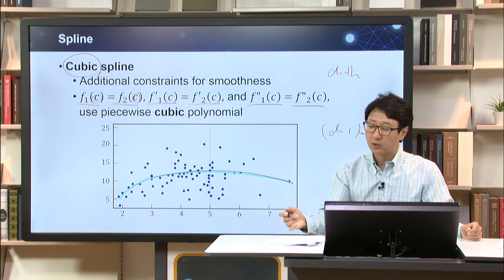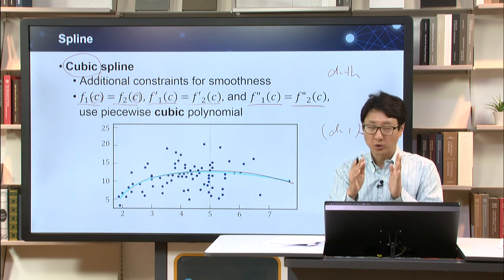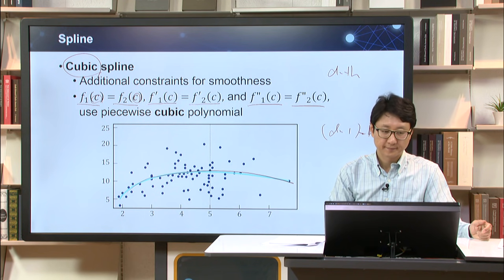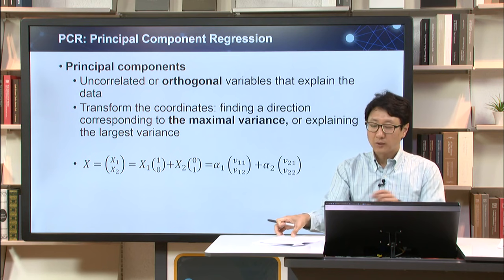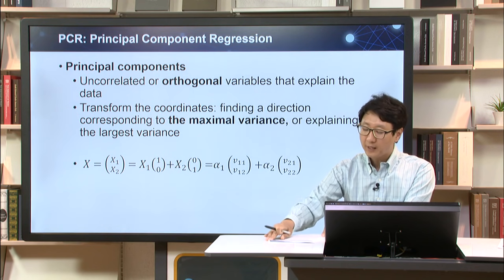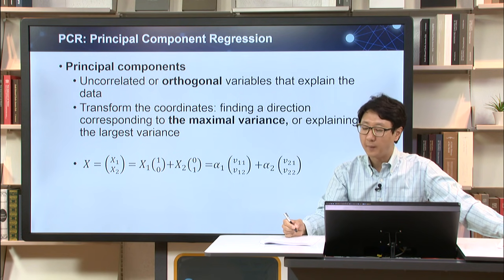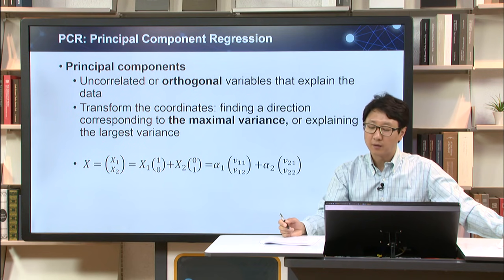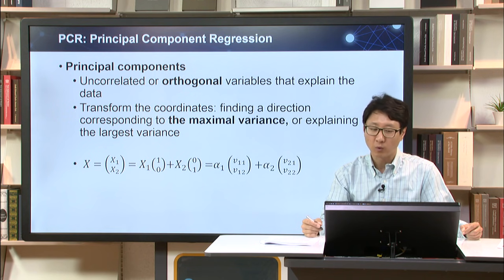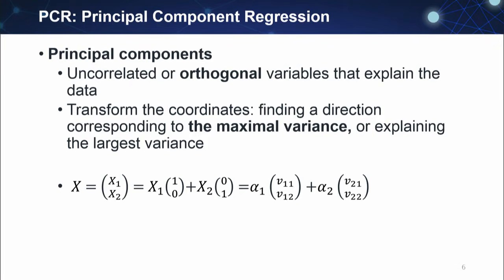But it is less flexible than local methods because it uses bins instead of estimating lines for all points. So up to now, we have discussed some methods to include non-linearity in the regression problem. Now we will see other methods to overcome high dimensionality of the data. The first one is principal component regression.